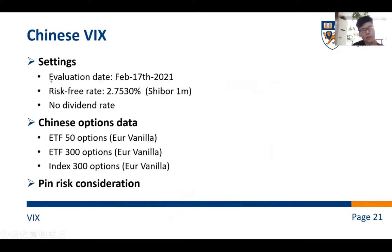So, first, the evaluation date is February 17th, 2021. And we take the SHIBOR one month rate as our risk-free rate. And if you would like to do some accurate calculation, you can construct a term structure using SHIBOR rates. And here we did not consider the dividend rate in the Chinese market. And we take three different kinds of Chinese option data, including the ETF 50 options, ETF 300 options, and index 300 options.